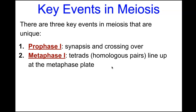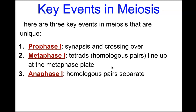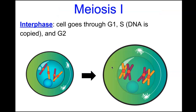In metaphase I, tetrads — homologous chromosome pairs paired up — line up along the metaphase plate. A tetrad consists of four sister chromatids lined up together. In anaphase I, those homologous chromosome pairs separate.